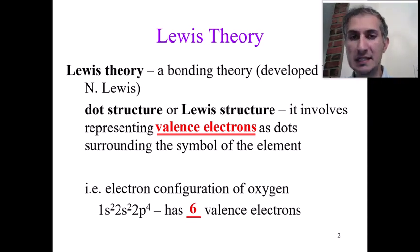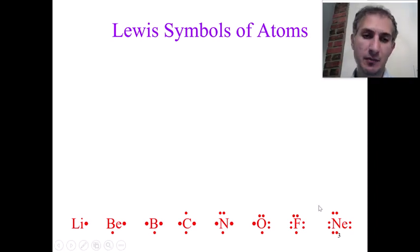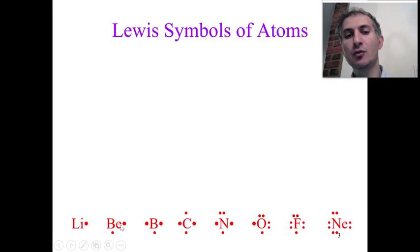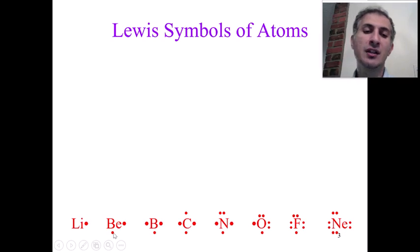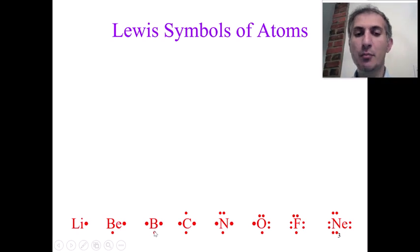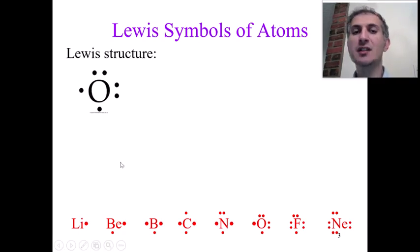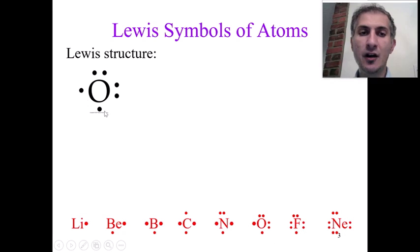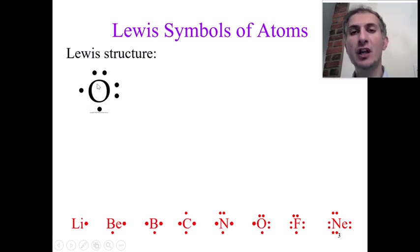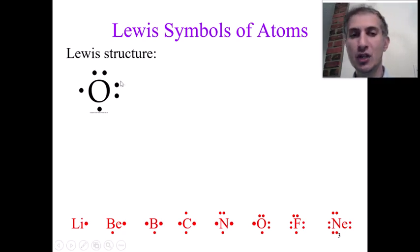Lithium is group number one, so we draw one dot. Beryllium is group number two, two dots. It doesn't matter where you draw the dots — there are four sides around the chemical symbol. For oxygen with six valence electrons, you draw one dot on each of the four sides first, then pair the remaining electrons, adding a second dot to two of those sides.